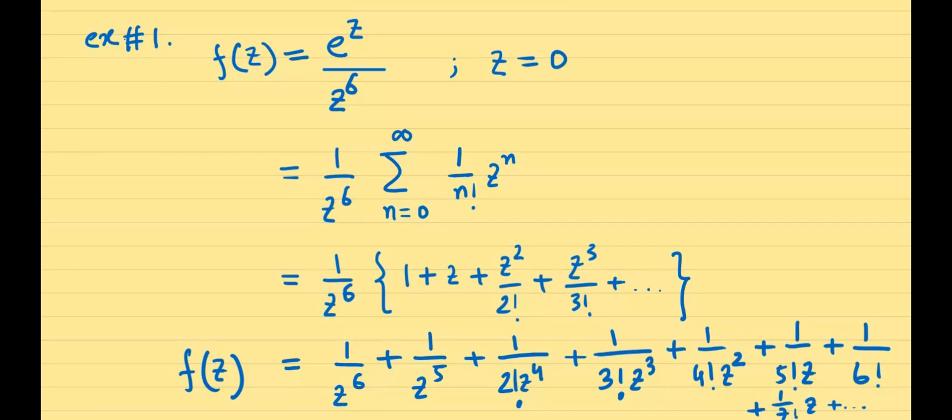Now it is time for us to find out the radius of convergence. What we do is we take the nth term, and we take the n plus 1 term, and we take the ratio, and then we set the limit as n tends to infinity. This becomes 1 over r, where r is the radius of convergence.